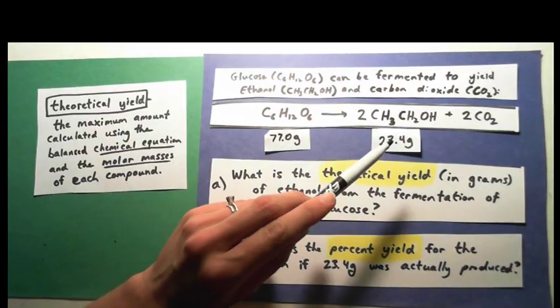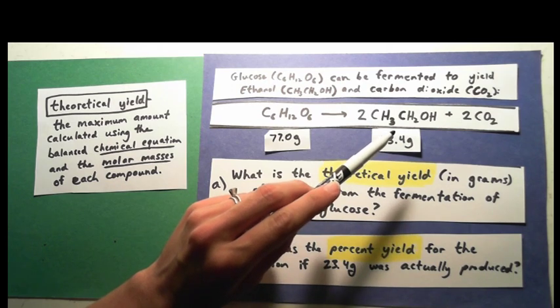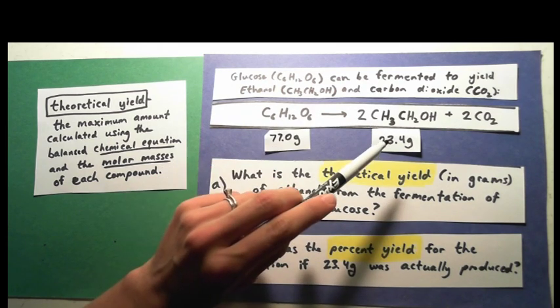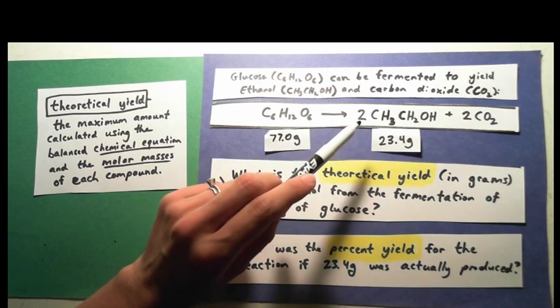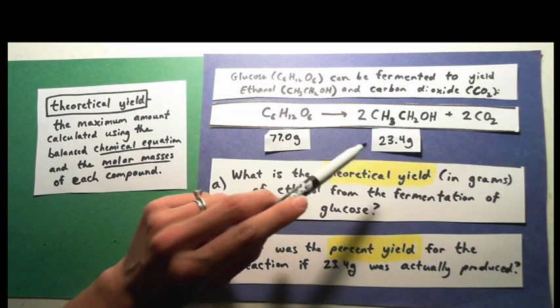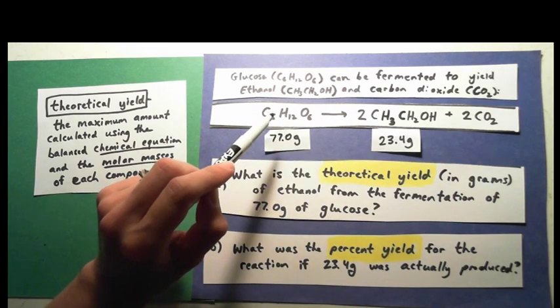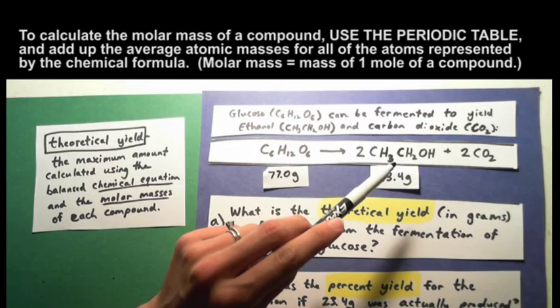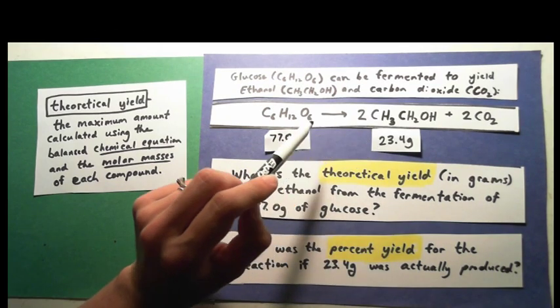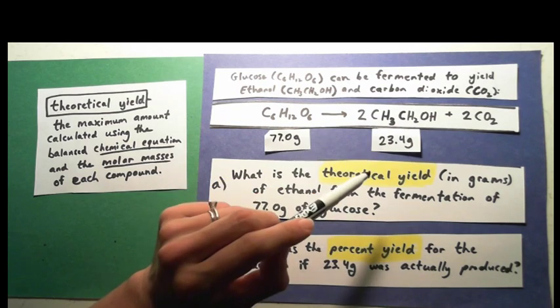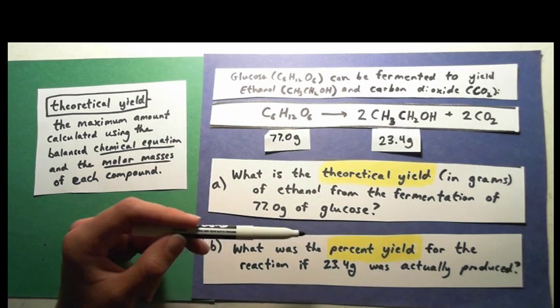The theoretical yield would be the maximum amount of ethanol that could be produced. In order to calculate this, you'd first have to have your balanced chemical equation — we have that. You would also need the molar masses for each of the compounds in question: the molar mass of glucose and the molar mass of ethanol. Then we can use our math to calculate that theoretical yield. Once we have the theoretical yield, we can get the percent yield.